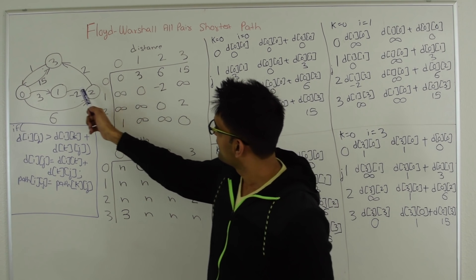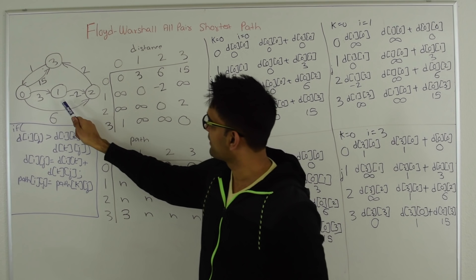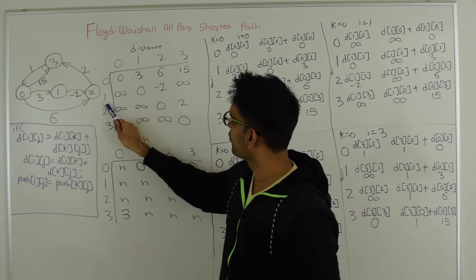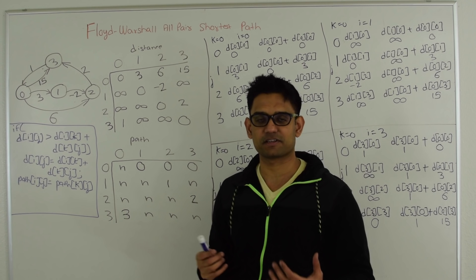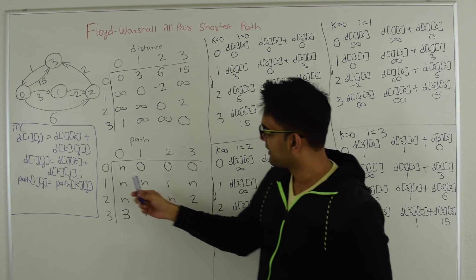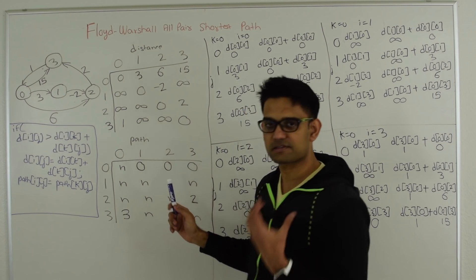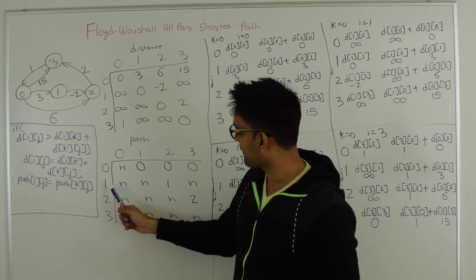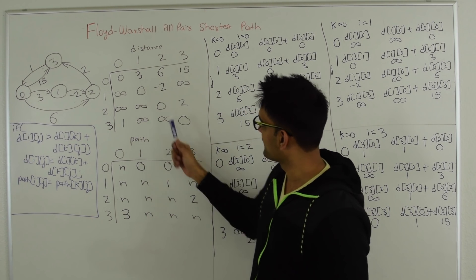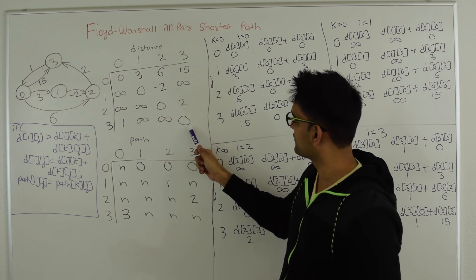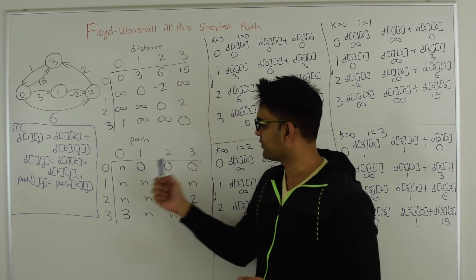For the edges — say there is an edge between 0 to 2 with distance minus 2 — so d[0][2] becomes minus 2. The path matrix is used to regenerate the minimum distance path between two vertices. Initially, if there is a path between 0 to 2, we put 0 here (the start of the edge), and if there is a path between 1 to 2 we put 1. For all paths that don't exist we put infinity, and d[0][0], d[1][1], d[2][2], d[3][3] are set to 0. In the path matrix we put N indicating no path is currently available.